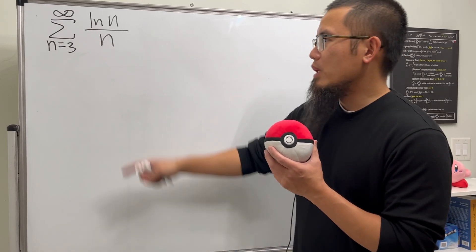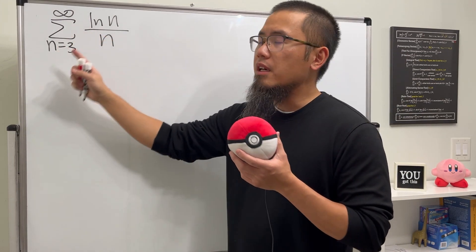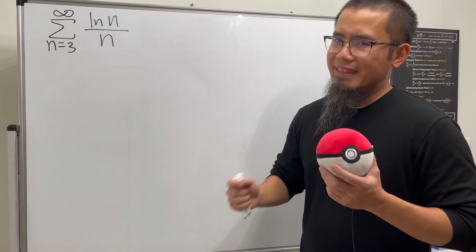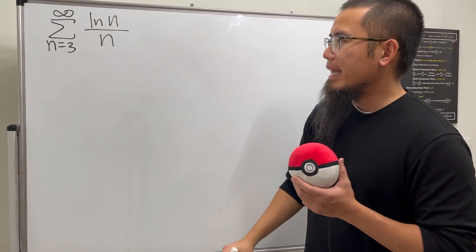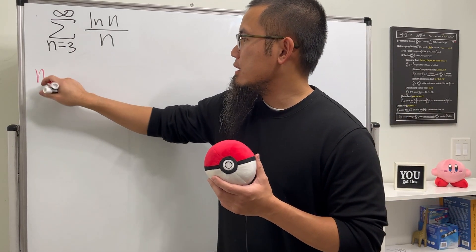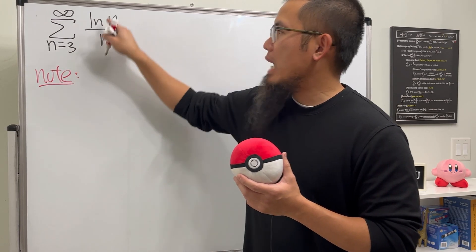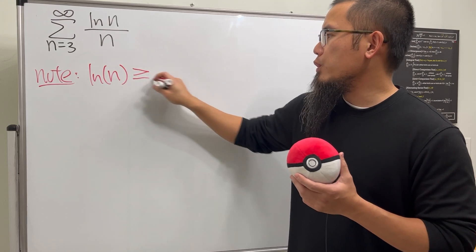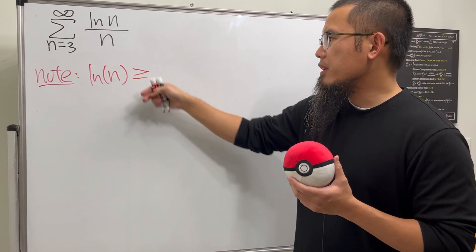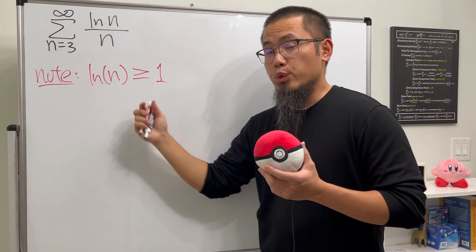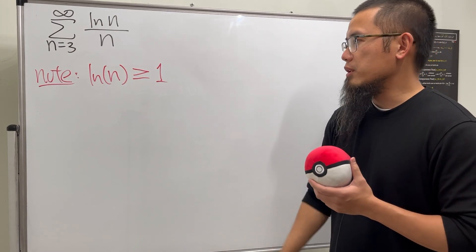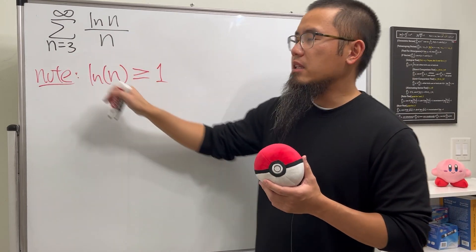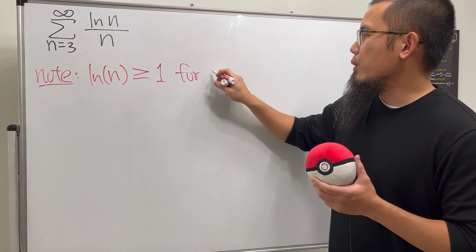The first series is the series as n goes from 3 to infinity of ln(n) over n. This diverges, and here is why: notice on the top we have ln(n), and this is always going to be greater than or equal to 1 when n is greater than or equal to 3.